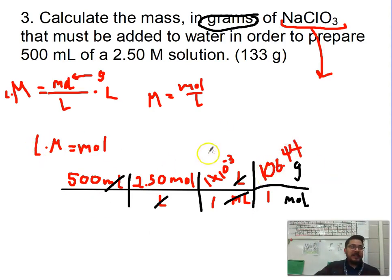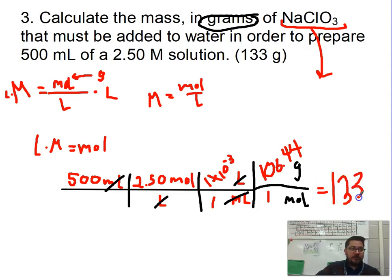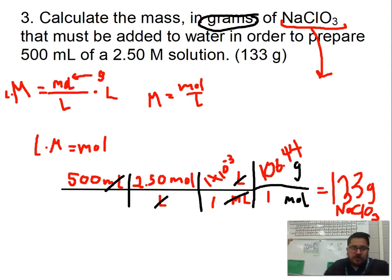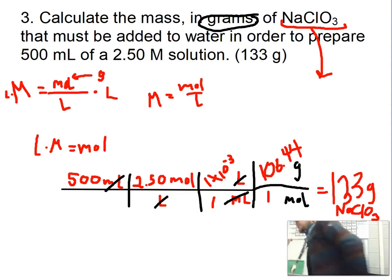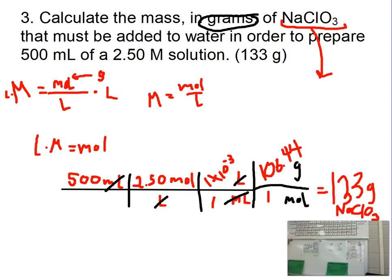I'm going to multiply all of these numbers and I'm going to get 133 grams of NaClO3. So what does 133 grams mean? Let me show you during the lab what you're going to be doing. Let me go grab some materials.